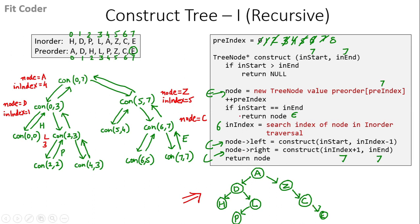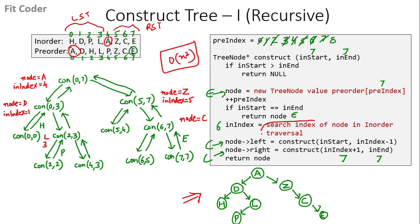This is the binary tree obtained from the two traversals. The logic is: we pick a node from the preorder traversal, find its index in the inorder traversal, the left portion becomes the left subtree and the right portion becomes the right subtree. We do it recursively, creating new nodes and linking left and right pointers at each step. The time complexity is O(n²) because of the search step - at every step we search the entire array, so in the worst case it can be O(n²).